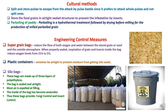The next method is cultural methods. Regarding pulse storage, pulses can be split and stored for a longer time, as pulse beetles prefer whole pulses and have less impact on split ones. Food grains should be stored in air-tight sealed structures to prevent investigation by insects. Another cultural method is parboiling of paddy — parboiling refers to hydrothermal treatment followed by drying before milling for the production of milled parboiled grain. Because of parboiling, all insects present in paddy seeds or paddy grains are killed.